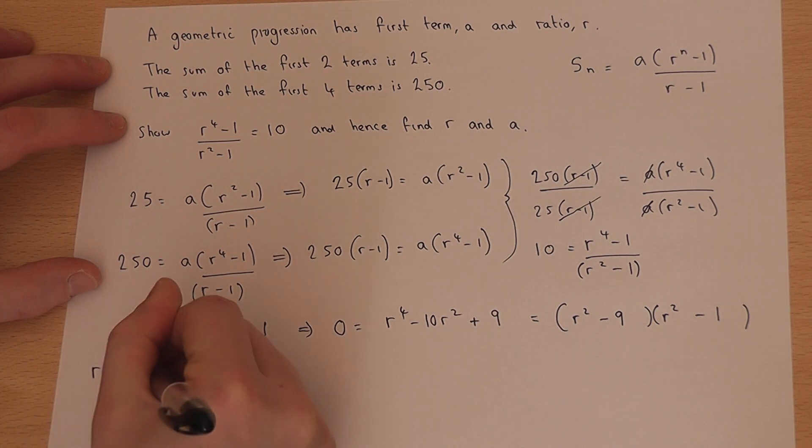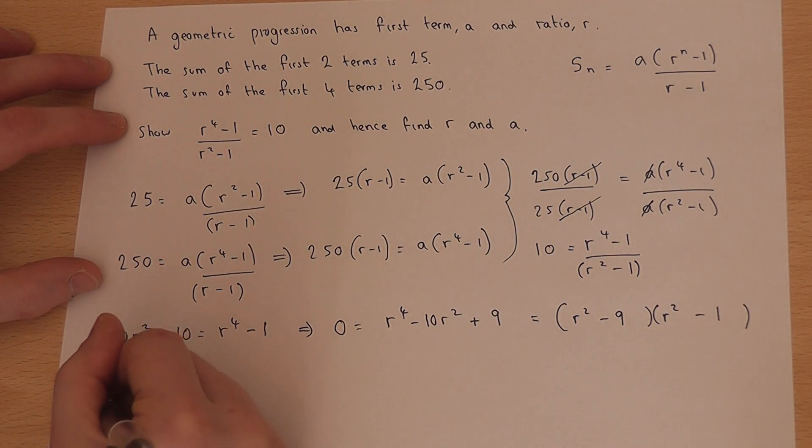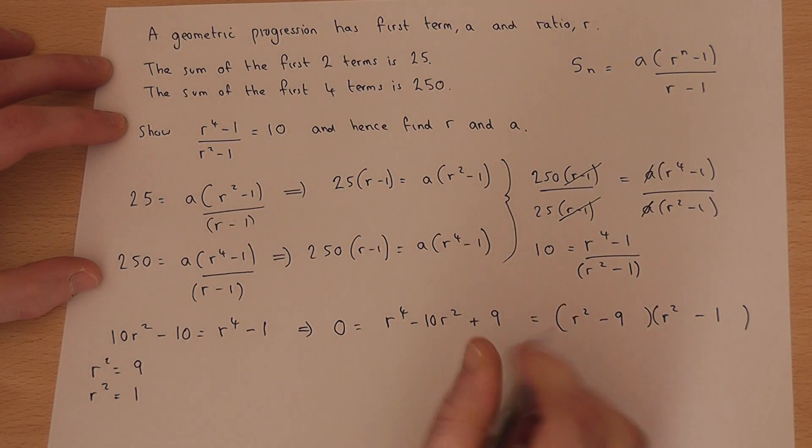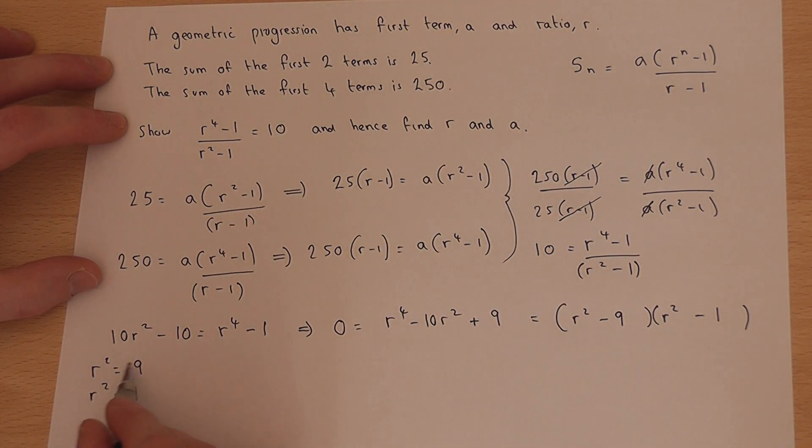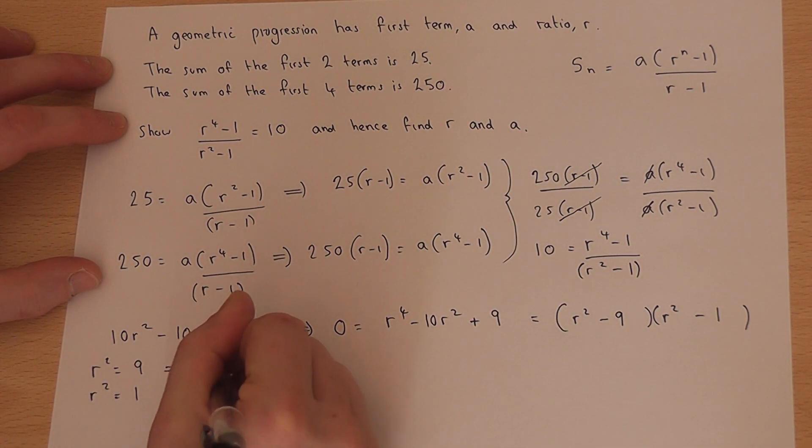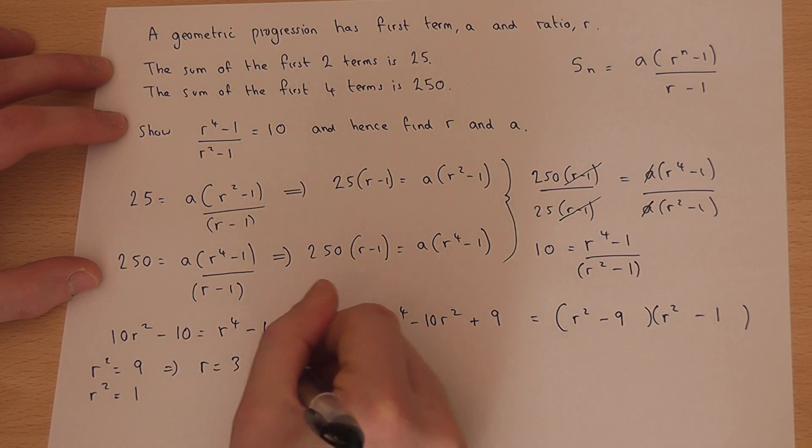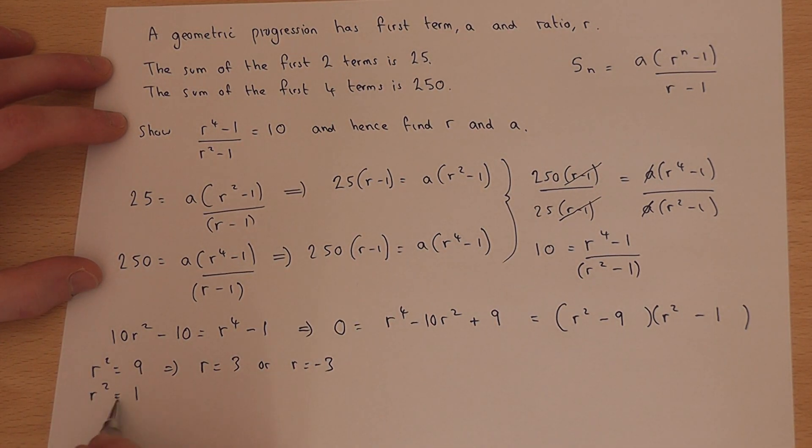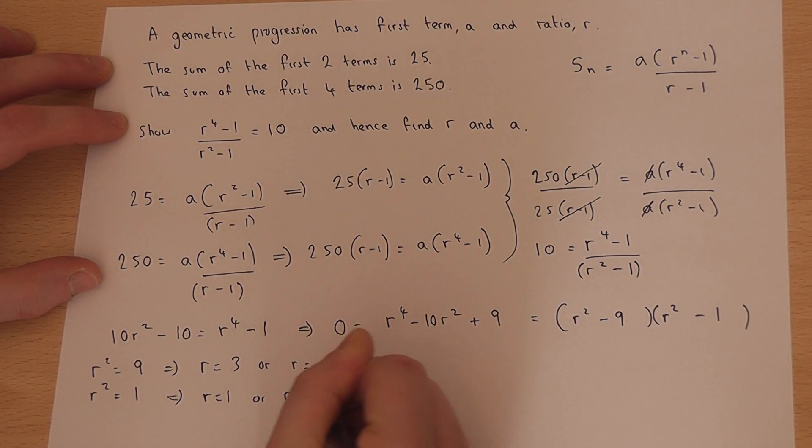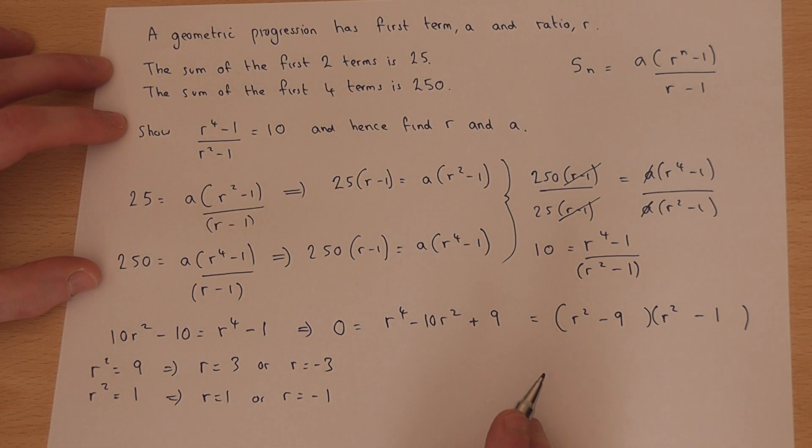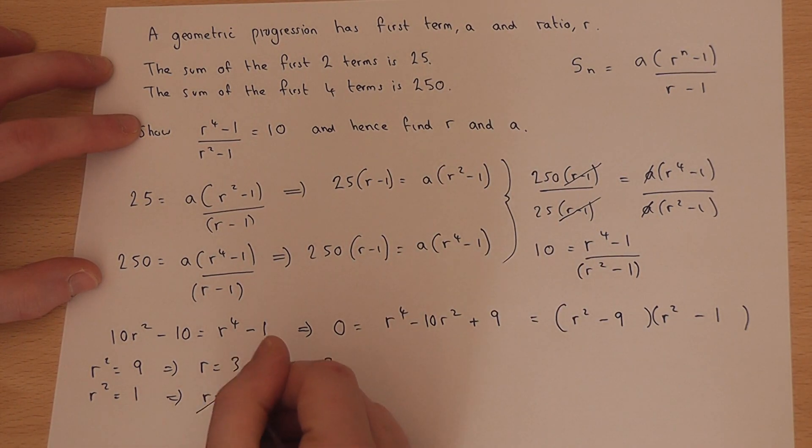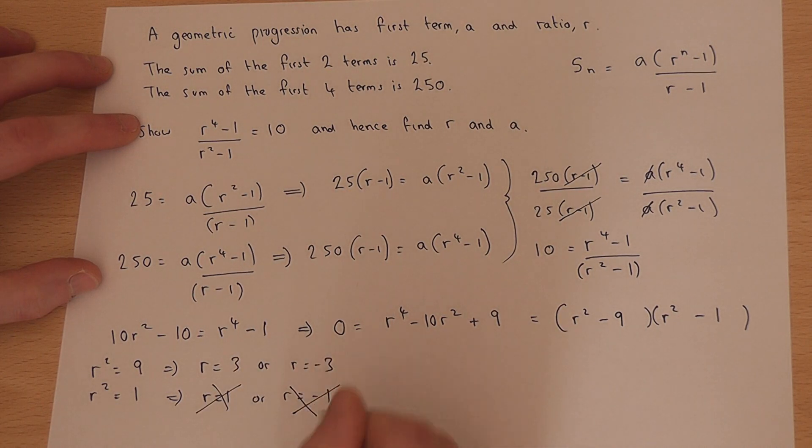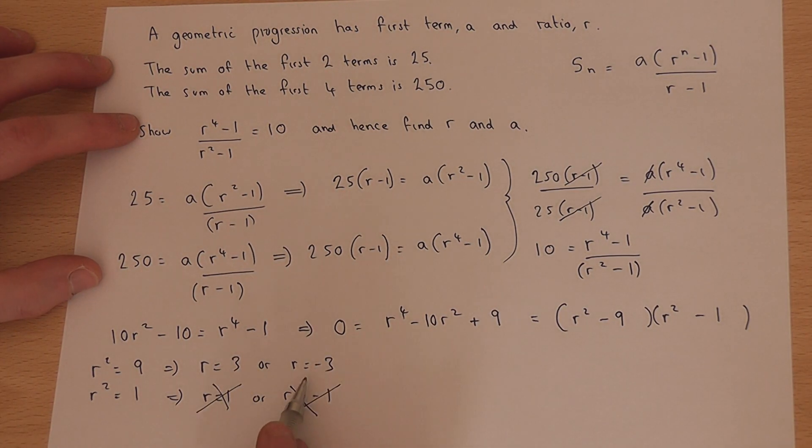So this gives us lots of values for r². r² could be 9 or r² could be 1. If r² is 9 then r could be plus 3 or minus 3. If r² equals 1 then r is 1 or minus 1. Now in the question we were told that r was not 1, so we can ignore those two options. It leaves us with r is 3 or r is minus 3.